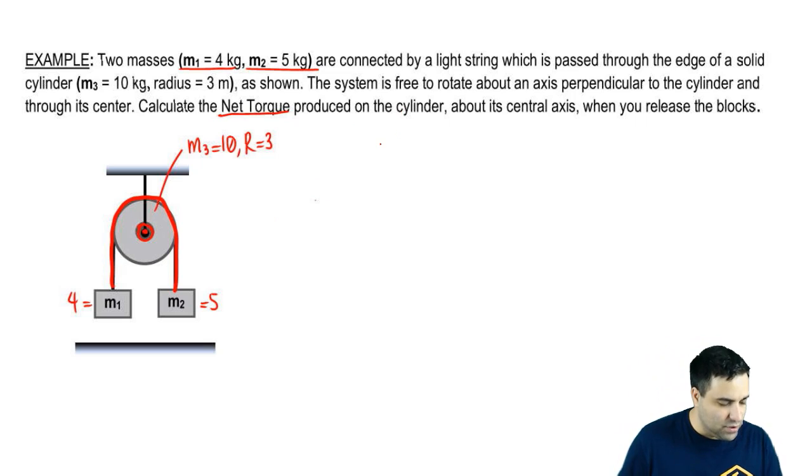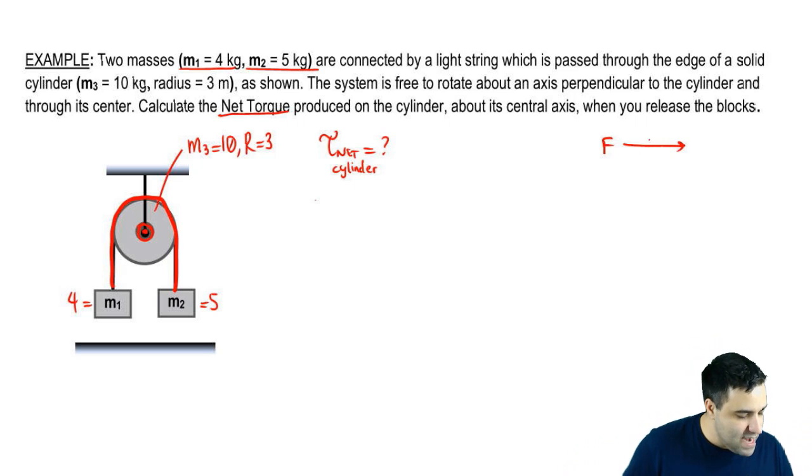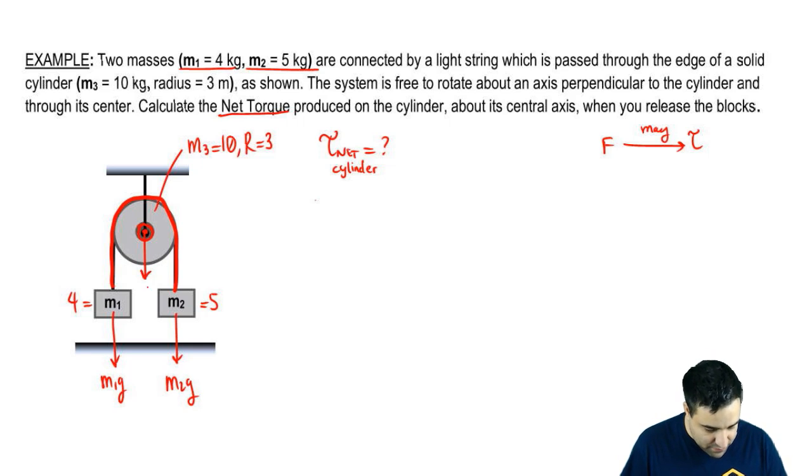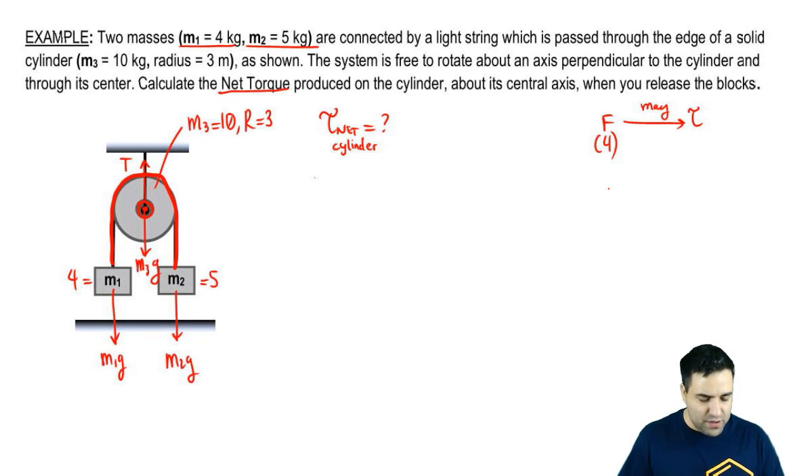We want to know what is the net torque produced on the cylinder when you release the blocks. So torque net is the sum of all torques, and we want to know the net torque on the cylinder, so we have to figure out how many torques act on the cylinder, add them all up. Remember, a force may produce a torque, so what we do is we look at all the forces on the cylinder, and then we figure out which ones produce a torque. So there are four forces that act on the cylinder. I have M1G pulling down, M2G pulling down. There is the MG of the cylinder itself, M3G, and there is a tension that holds the cylinder up. So there are four forces, which means there could be as many as four torques.